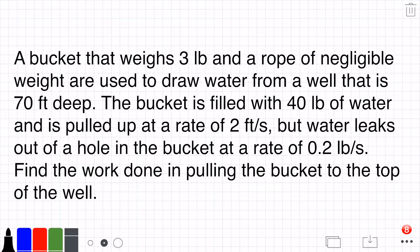A bucket that weighs three pounds and a rope of negligible weight are used to draw water from a well that is 70 feet deep. The bucket is filled with 40 pounds of water and is pulled up at a rate of two feet per second, but water leaks out of a hole in the bucket at a rate of 0.2 pounds per second. Find the work done in pulling the bucket to the top of the well.